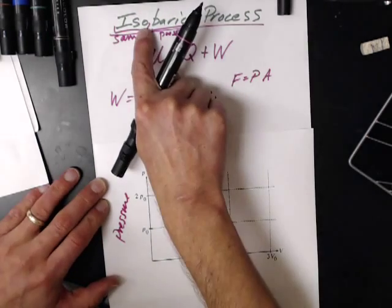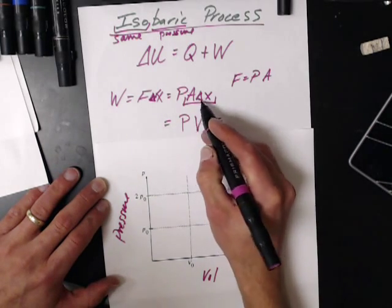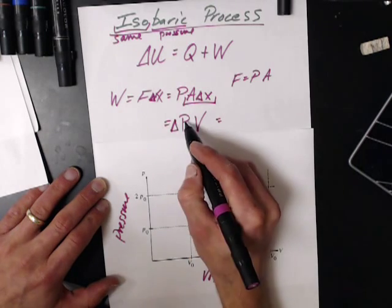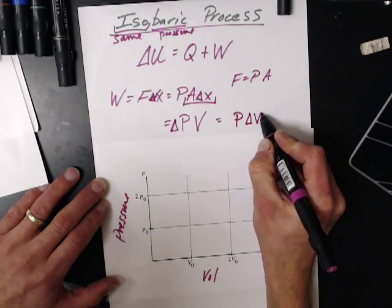So in an isobaric process, because work is that delta X and this is delta floating out here, what we're going to do is we're going to push that delta. I want the P to not change, P delta V.